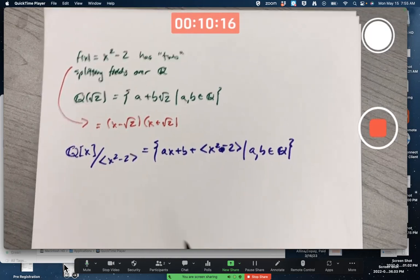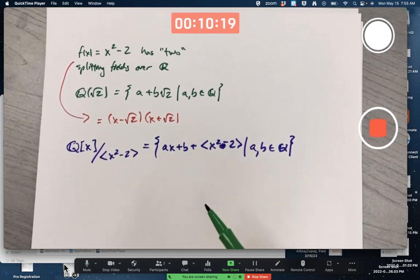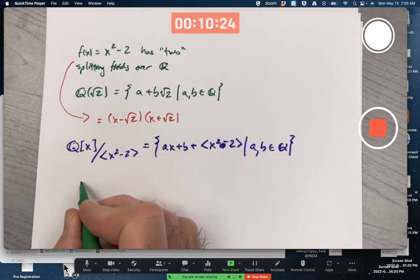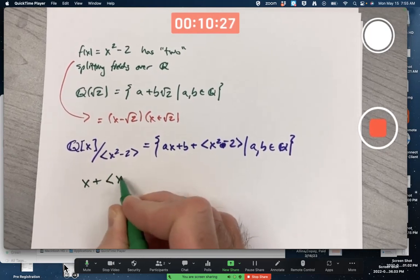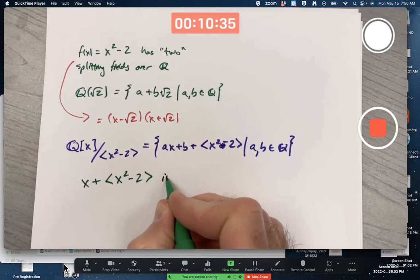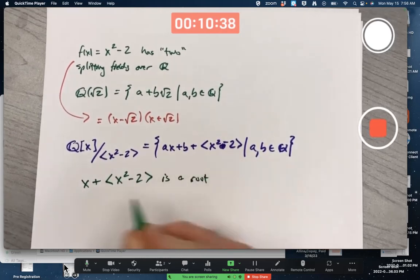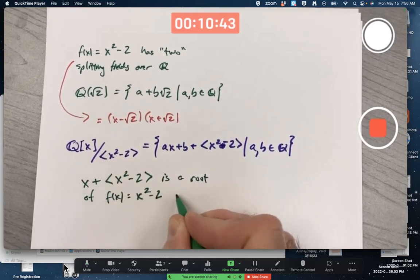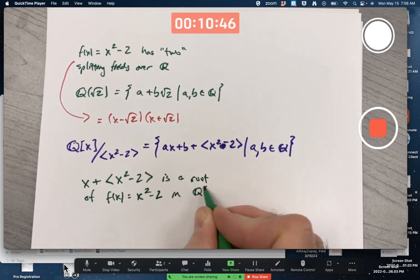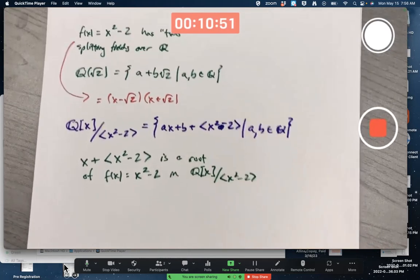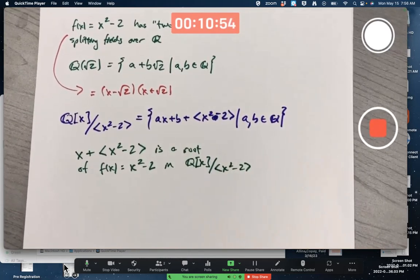What is a root of f(x) in this field extension? It's a little weird. Ready? x + that ideal, that coset is a root. This is a root of f(x) = x² - 2 in this factor ring. Doesn't look like a root, does it?